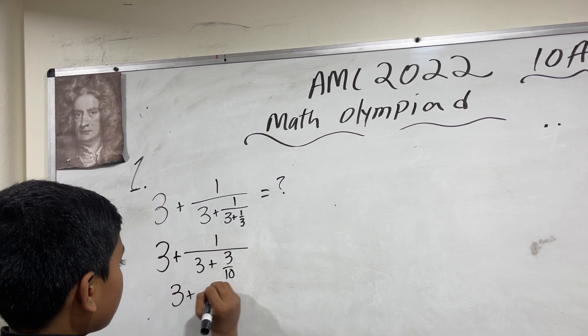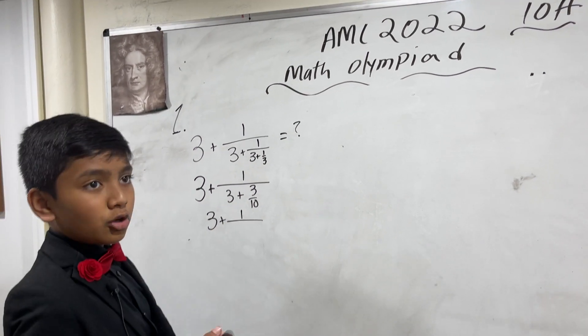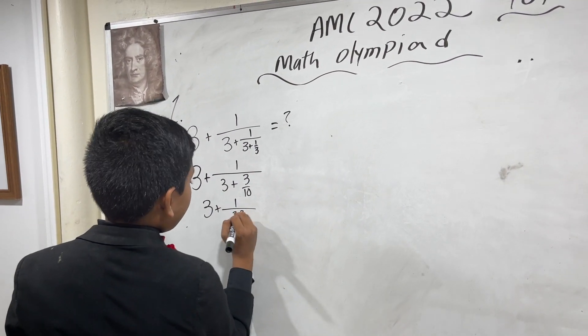So, 3 plus 1 over 3 is equal to 30 tenths, so this becomes 33 over 10.